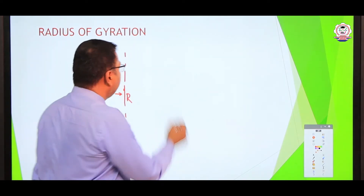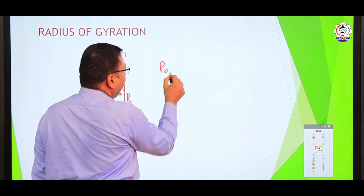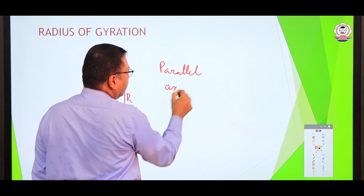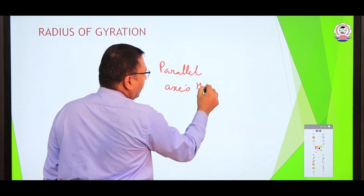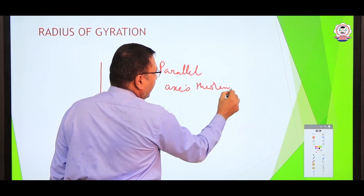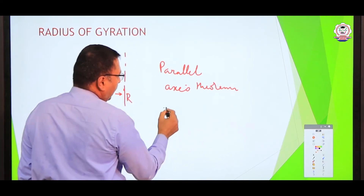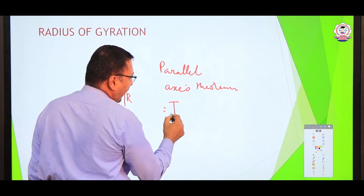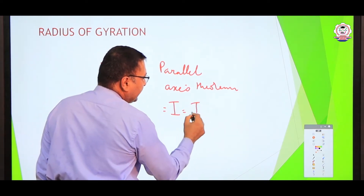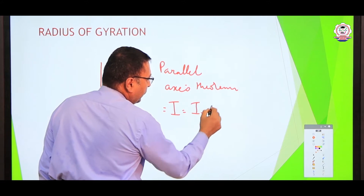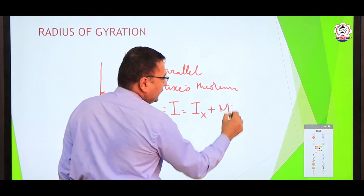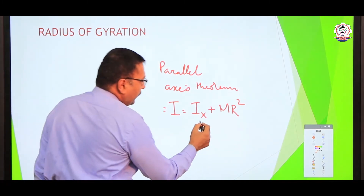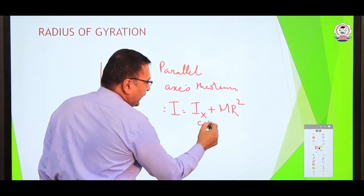We can call it in relation to the parallel axis theorem. The parallel axis theorem states that the net moment of inertia I of an object is equal to Ix plus m times d squared. Here Ix is sometimes referred to as Icm, the moment of inertia about the centre of mass.